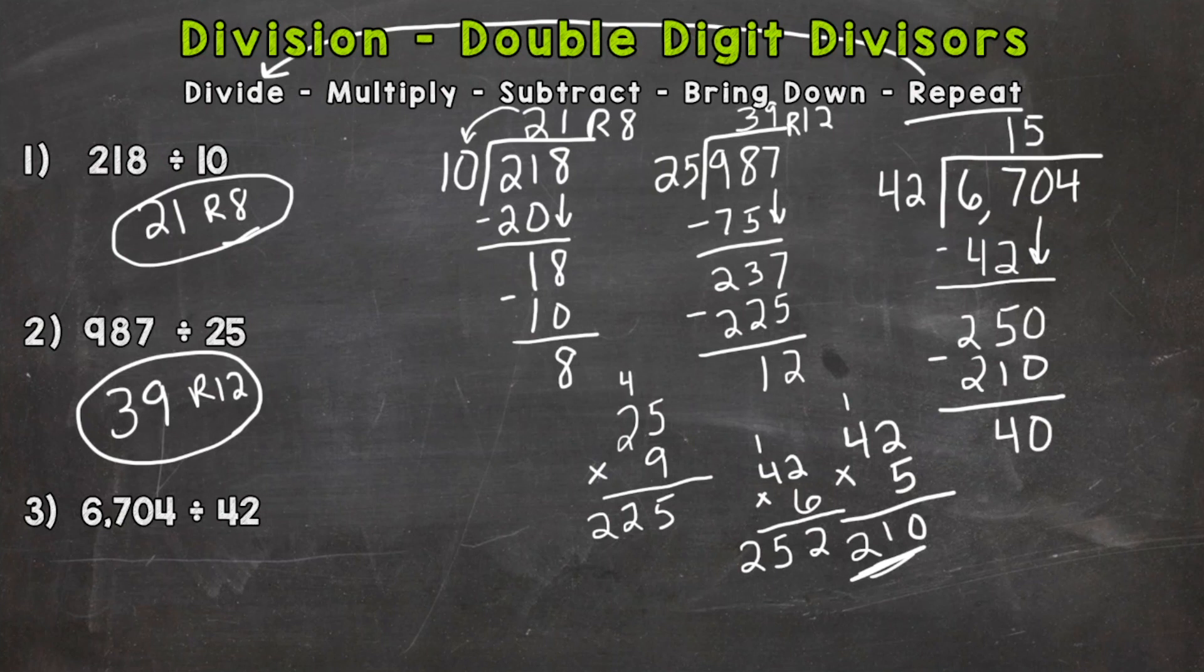And now we need to bring down the 4, so we have 404. So we need to do 404 divided by 42. Well, we know 42 times 10 is 420, and 404 is pretty close to that. So let's scale it back 1. Let's try 42 times 9 over here to see what we end up with. 2 times 9 is 18, carry the 1.